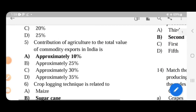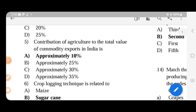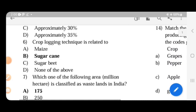Contribution of agriculture to the total value of commodity exports in India is approximately 10%. If you check, it's 9% or something, but you know, confirm the answer. Once you Google it, you will find it.